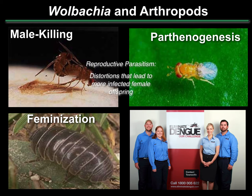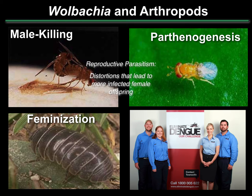In arthropods, Wolbachia is a reproductive parasite. Reproductive parasitism refers to distortions by the bacteria that lead to more infected female offspring than the host would otherwise produce. In mushroom-feeding flies, we have male killing, where male embryos are specifically killed and female embryos are allowed to live. Parthenogenesis occurs in many species of haplodiploid wasps, where Wolbachia converts chromosomes of haploid eggs, causes an endoduplication event making that egg diploid. In a haplodiploid system, diploid eggs become female. So no sperm, no males are required — Wolbachia takes over sexual reproduction and makes an all-female population.